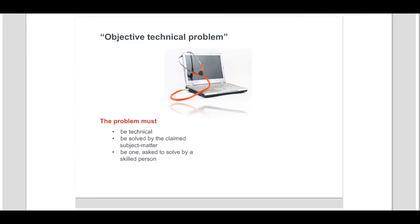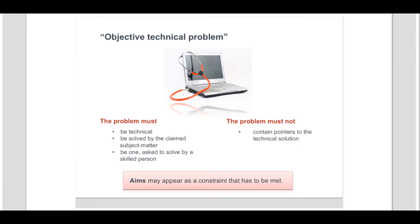The objective technical problem must not contain pointers to the technical solution or partially anticipate it. However, where a non-technical aim is described in a claim, this aim does not contribute to the technical character. Therefore, it may appear in the formulation of the technical problem to be solved, in particular as a constraint that has to be met.